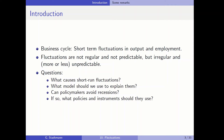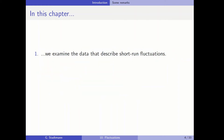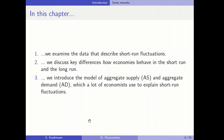Can policy makers avoid a recession, and if so, what kind of instruments and policies do they implement in order to avoid one? In this chapter we examine the data describing short-term fluctuations, discuss key differences in how economies behave in the short run versus the long run, and introduce a model of aggregate supply and aggregate demand used by many economists to explain short-run fluctuations.